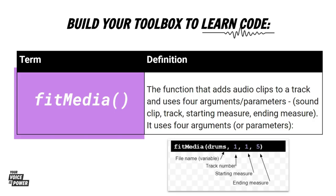One more term to add: the function that adds audio clips to a track and uses four arguments or parameters is fitMedia. Those parameters are the sound clip, the track, the starting measure, and the ending measure. Those are the four arguments or parameters that this particular built-in function needs.